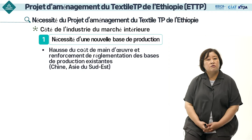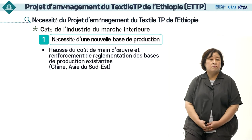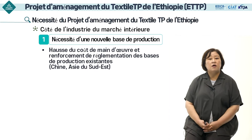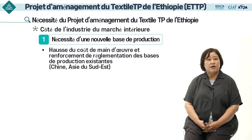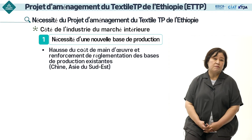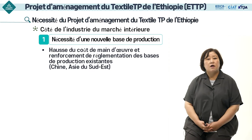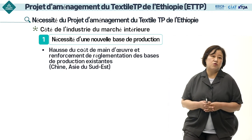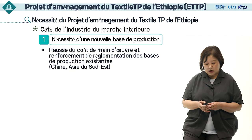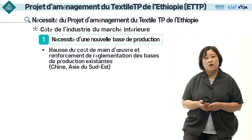Du côté de l'industrie coréenne, la Corée a maintenant besoin d'une nouvelle base de production. Dans le passé, la Chine avait été sa base de fabrication. Mais comme en Chine les coûts de main-d'œuvre ont augmenté et que les réglementations se sont renforcées, la Corée a déplacé sa base de production vers l'Asie du Sud-Est, comme au Vietnam ou au Bangladesh. De nos jours, le coût de la main-d'œuvre a aussi augmenté rapidement dans cette région, ce qui n'est donc pas favorable pour l'environnement des affaires.